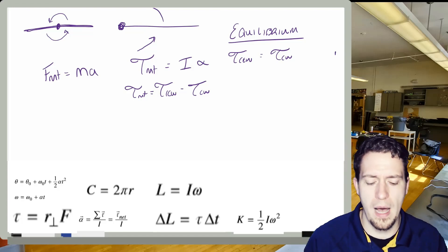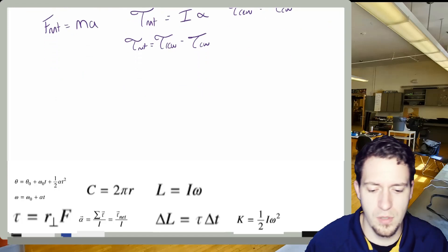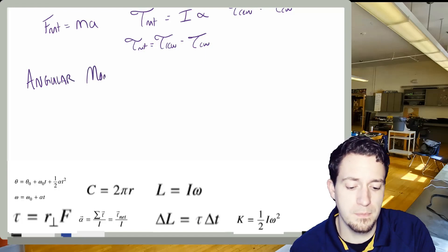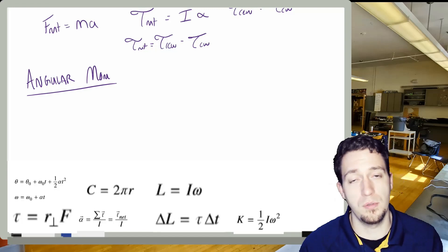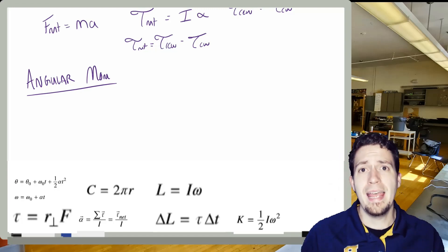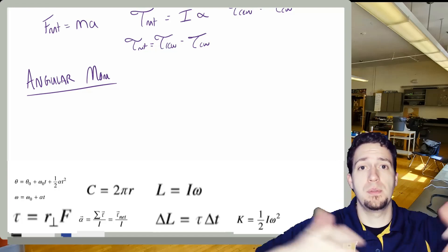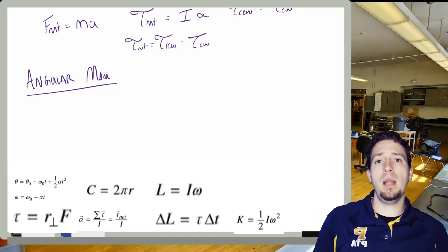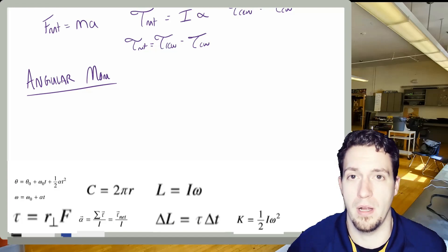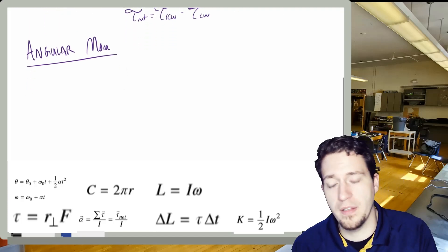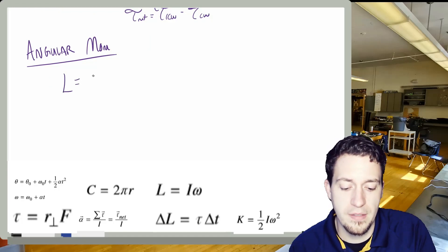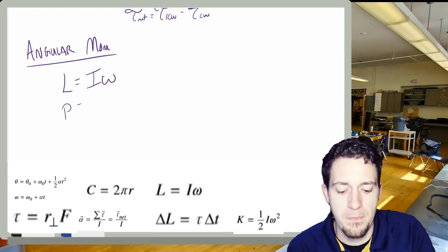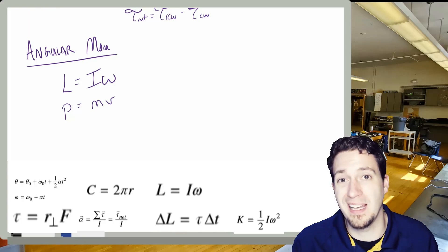The other big topic we discussed is angular momentum. Angular momentum is very similar to linear momentum in that it can be conserved if our system is the big thing. A phrase we like to say is: nothing external, no changes. Angular momentum is represented by L — obviously L for my last name — and is I-omega. This is analogous to linear momentum being mv.